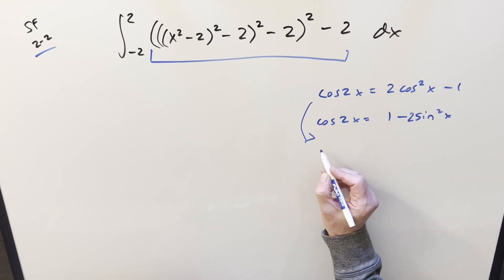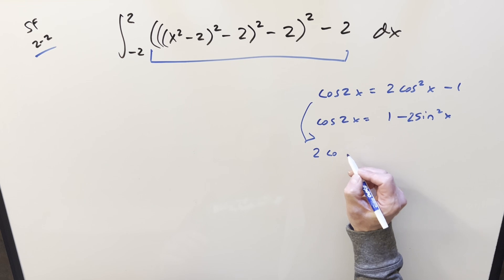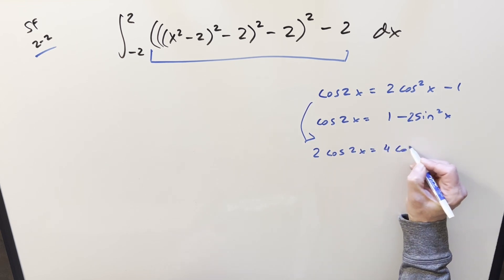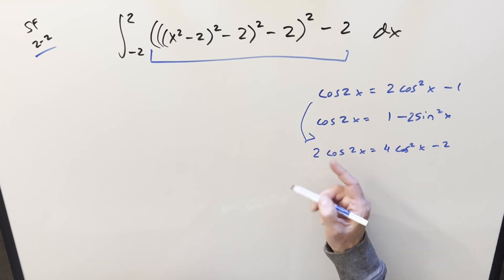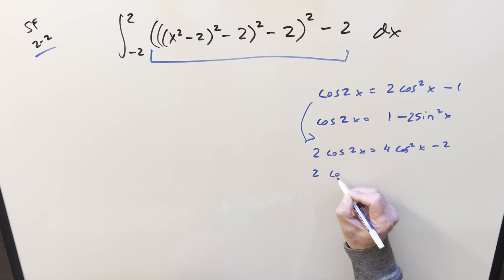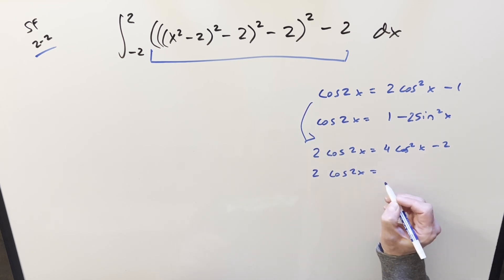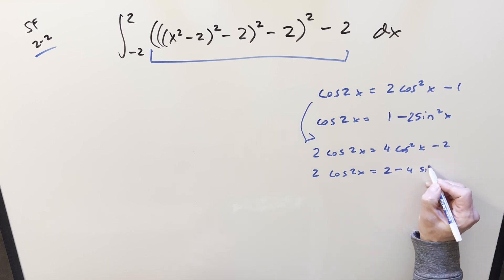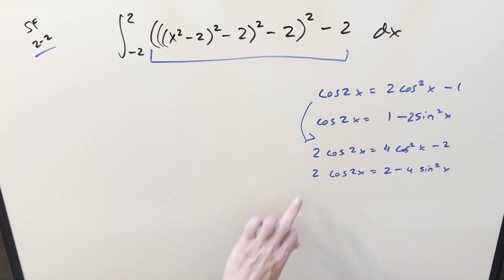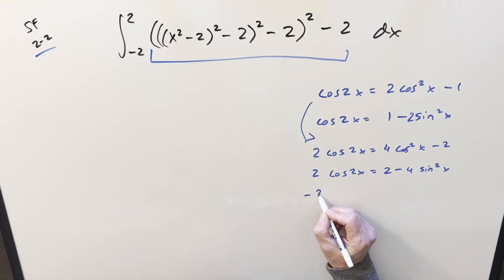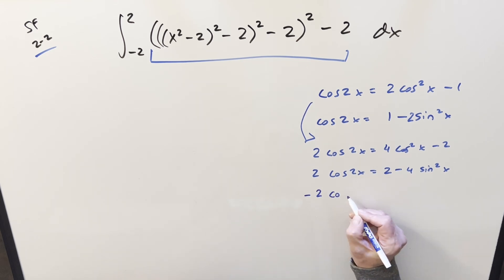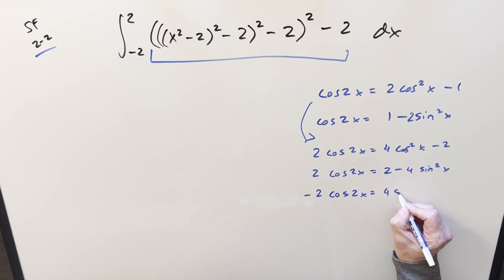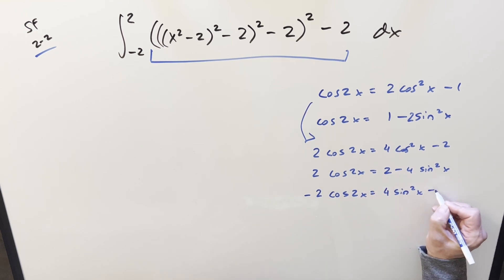Now for the first identity, if I multiply by two on both sides, two cosine 2x gives us four cosine squared x minus two. If I do the same thing on the second one, two cosine 2x equals two minus four sine squared x. But then on this second one I can reverse the sign — multiply by minus one — so minus two cosine 2x equals four sine squared x minus two.